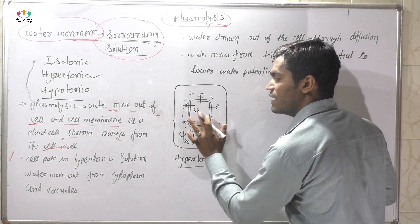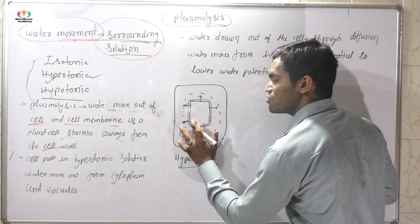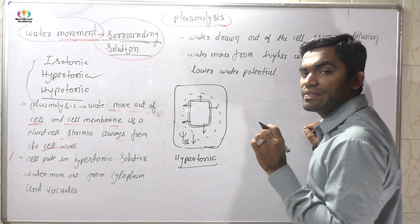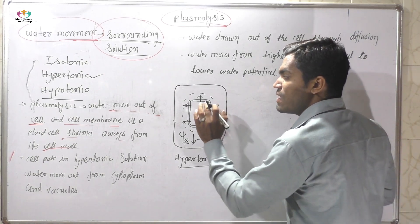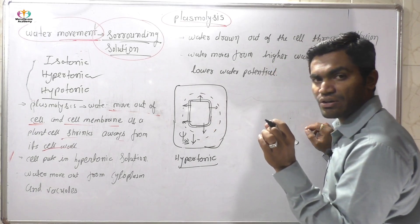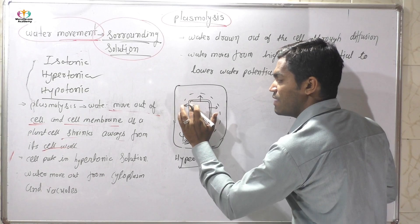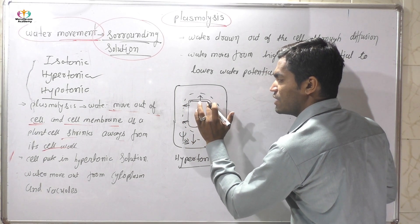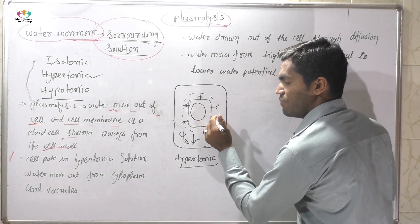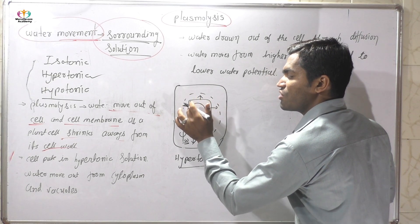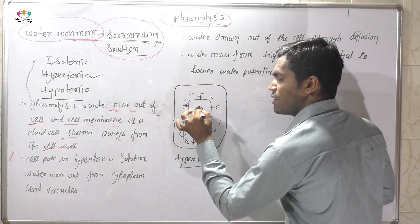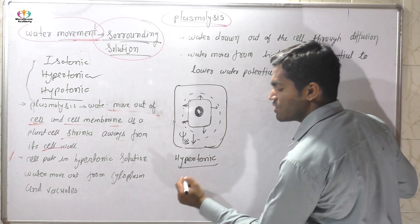When water comes out from the cell, the concentration of water in the cytoplasm decreases. This affects the cell membrane because as water exits, a distance is created between the cell wall and the cell membrane, and the cell membrane becomes shrunken. The cell wall remains in place while a gap is created, and the cell membrane becomes very shrunken — that condition is called plasmolysis.